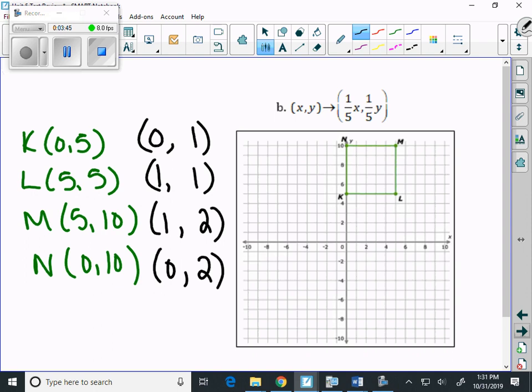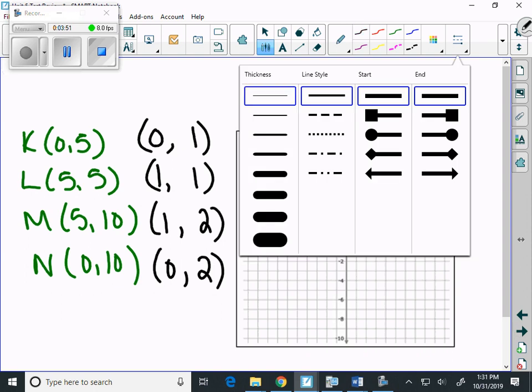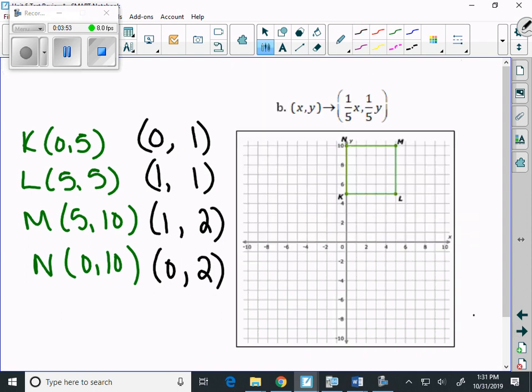And we can draw our picture here. 0, 1. And 1, 1 here. 1, 1 is there. 1, 2 is here. And 0, 2 is there. And there's our dilated figure.